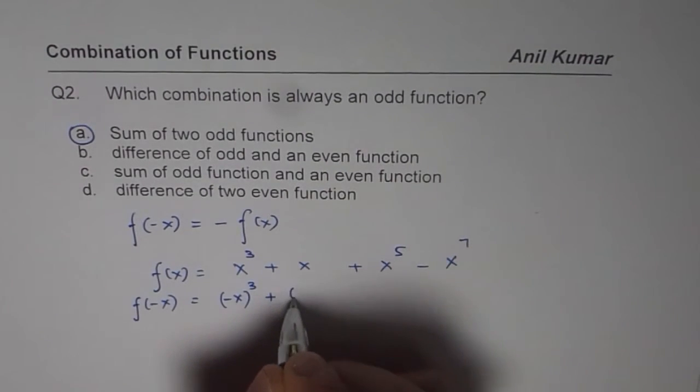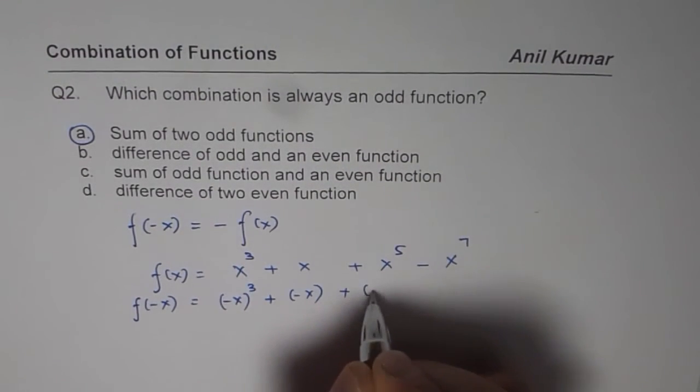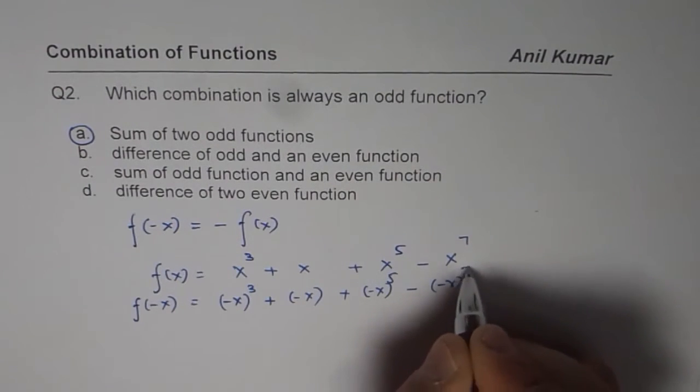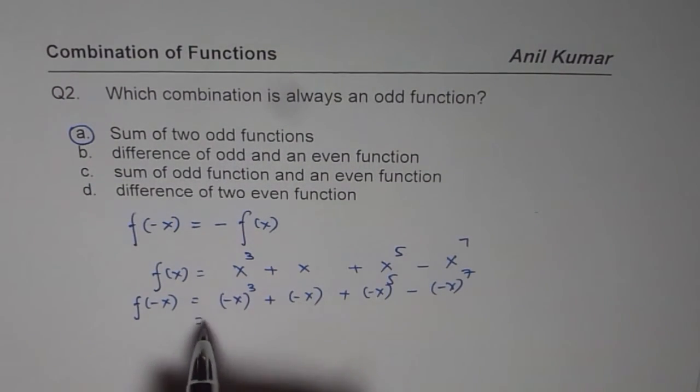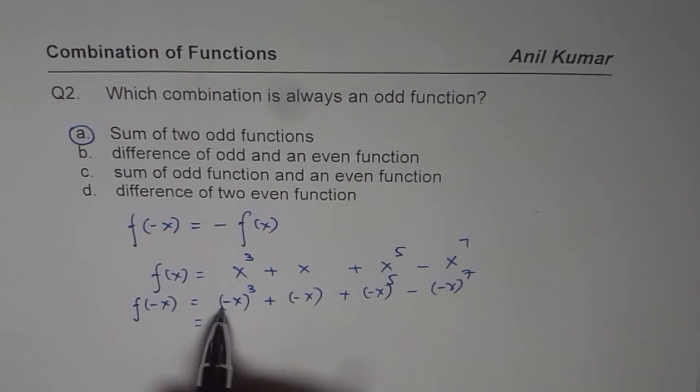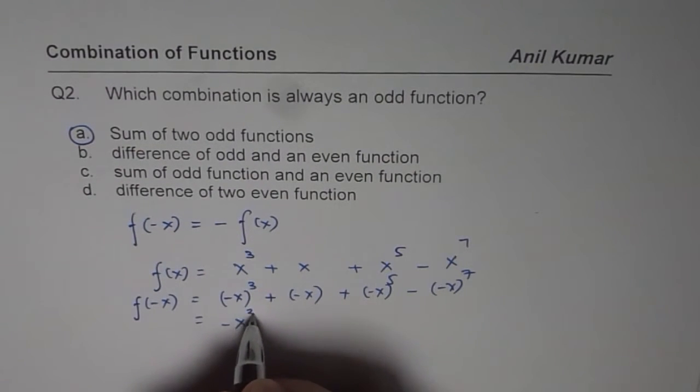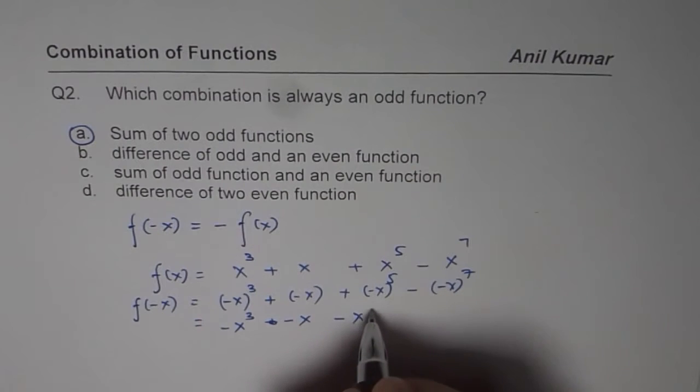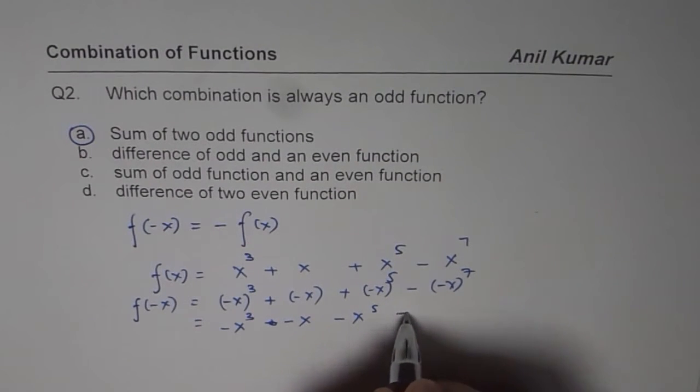So we get what? We get minus x plus minus x to the power of 5 minus minus x to the power of 7. Now odd powers will leave negative quotient, so we will get a negative coefficient for these, so this could be written as minus x cube plus minus, let me write this as minus x, minus x to the power of 5 and minus minus becomes plus x to the power of 7.